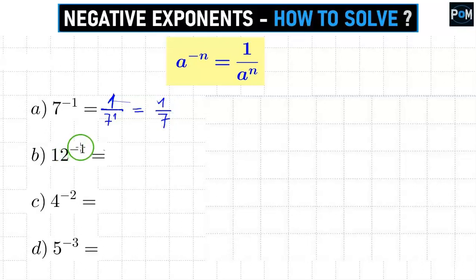In example b, we have 12 to the power of negative 1. We also draw a fraction line. At the top, we put our number 1, and in the denominator, we put 12 to the first power. It's what was here, but without the minus, and we get the result, which is 1 twelfth.